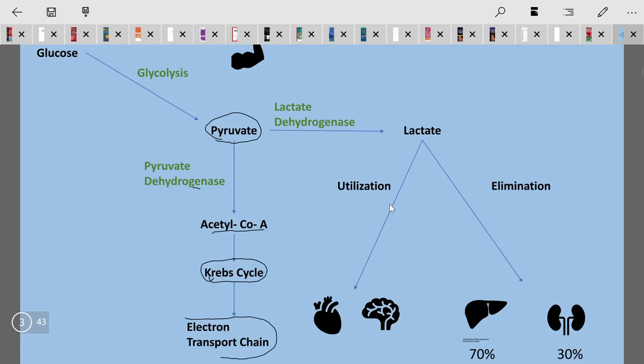The energy is extracted and converted into ATP in the electron transport chain. If the oxygen is not proper, then the pyruvate is converted to lactate in the presence of lactate dehydrogenase.